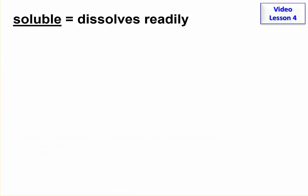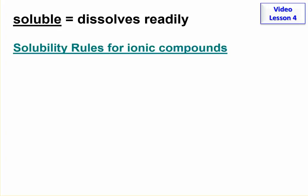We need to talk a little bit more about solubility and ionic compounds, because what we want to get to is knowing when a compound in water is in the ionic form — how many ions does it form, or is it 100% ions? Soluble means it dissolves readily, and we have some rules that tell us which ionic compounds dissolve.